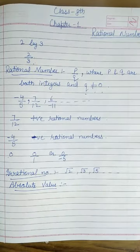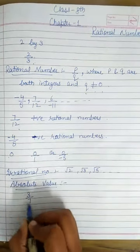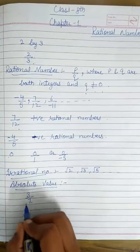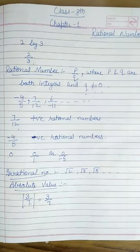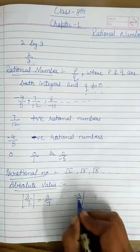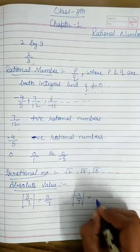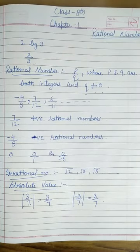What is absolute value? The absolute value of any rational number is its numerical value with a positive sign. For example, the absolute value of 3 by 7 is 3 by 7, and the absolute value of minus 3 by 7 is also 3 by 7. This means the absolute value of any rational number is always positive or non-negative.